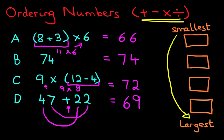So which number is the smallest? Let's start with the smallest. We've got 66, 74, 72, 69. Well, the number which begins with 6 is going to be the smaller ones. So that's either 66 or 69.